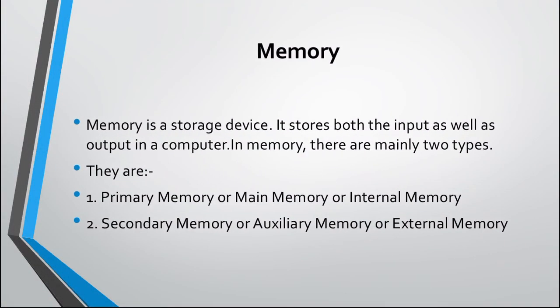First, memory is the storage device — it stores both the input as well as the output in a computer. There are mainly two types: primary memory and secondary memory. Primary memory is also called main memory or internal memory; we do not store data permanently in primary memory. Secondary memory stores data permanently and is also called auxiliary memory or external memory.